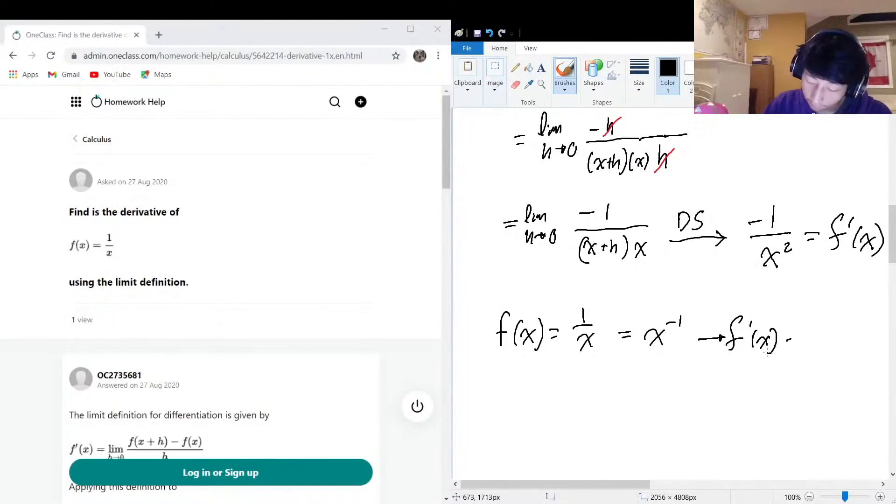The derivative of f(x) is equal to negative one multiplied by x to the power of negative two, which is equal to negative one over x squared, which is precisely the same thing as we got with the limit definition.